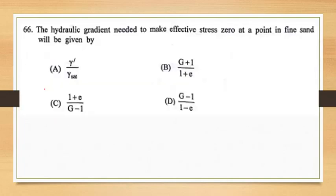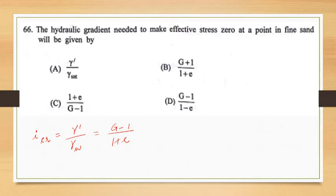The next question: the hydraulic gradient needed to make effective stress zero at a point in fine sand will be given by — now this is known as the critical hydraulic gradient, given by γ_sub / γ_w, or equivalently (G − 1) / (1 + e). However, neither of these equations appeared in the options. It was mentioned after the exam that the correct option was missing, and hence one mark was allotted to everyone. So there is no correct answer among options A, B, C, or D.